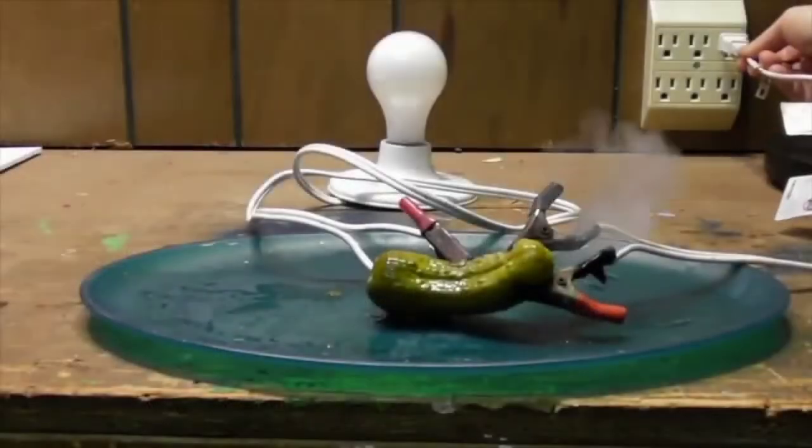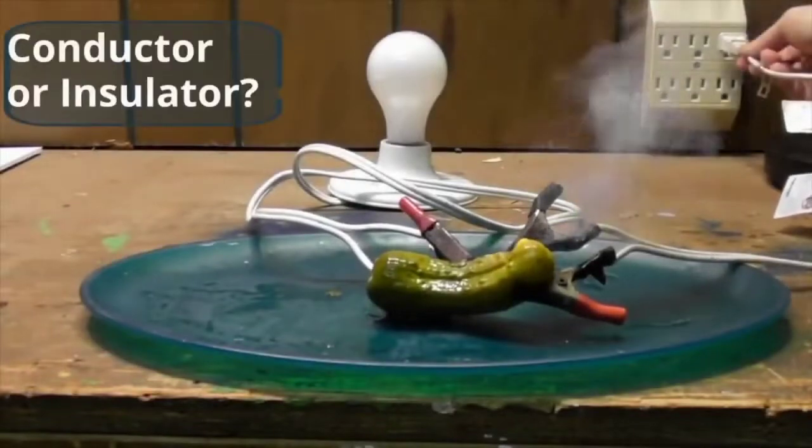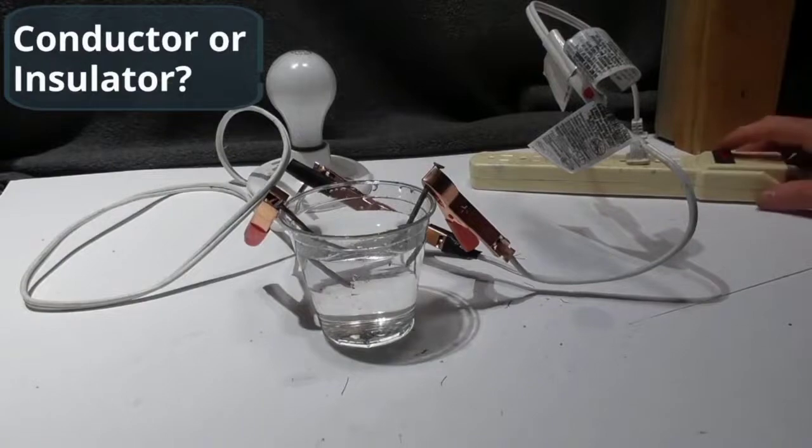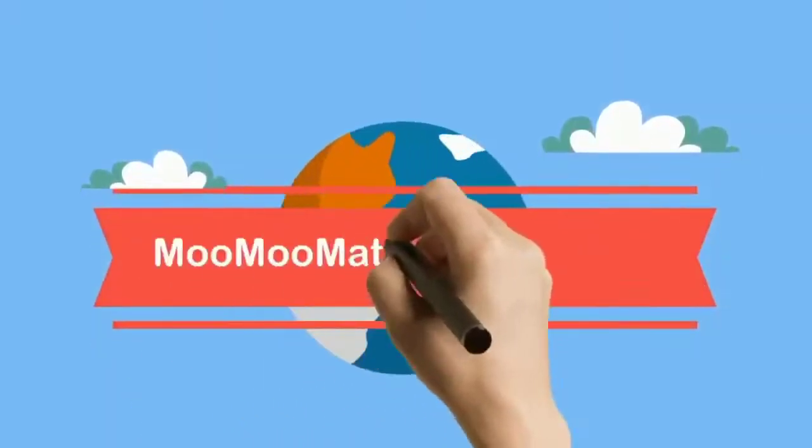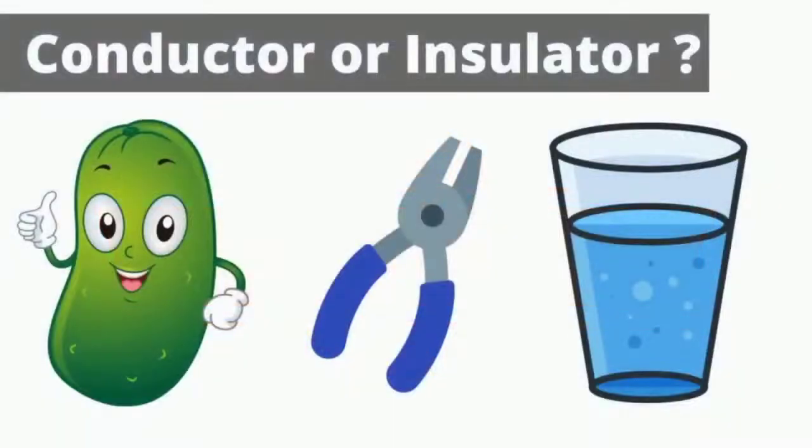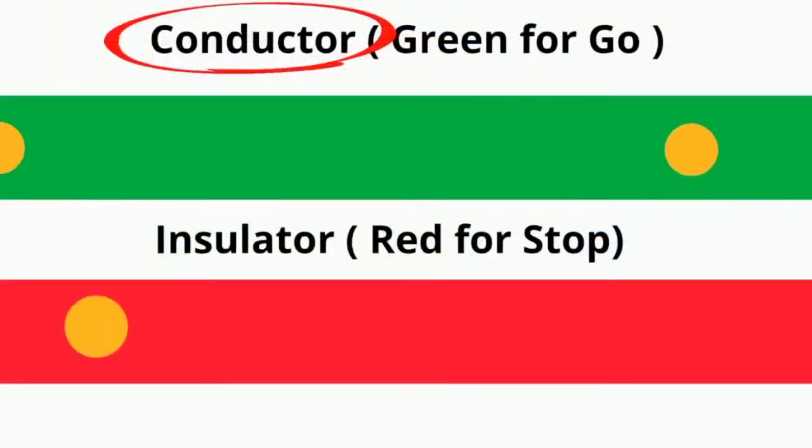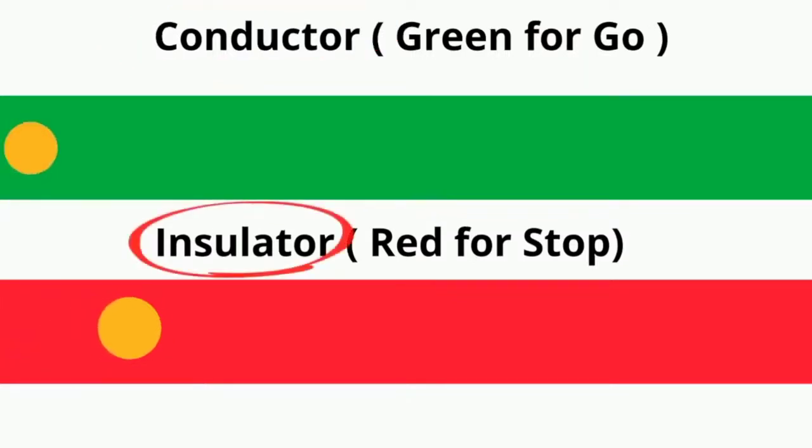Do you think this dill pickle is a conductor or an insulator? How about this cup of water? Welcome to MooMoo Math & Science. A conductor is an object or material that allows the flow of negatively charged electrons in one or more directions, which results in electric current. An electrical insulator is a material in which the electrons do not flow freely.